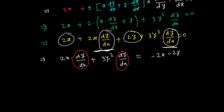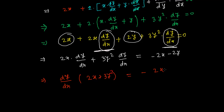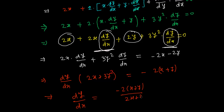We factor out dy/dx from the left side: dy/dx · (2x + 3y²) = −2(x + y). Therefore, dy/dx = −2(x + y) / (2x + 3y²). That is the derivative of the implicit function.